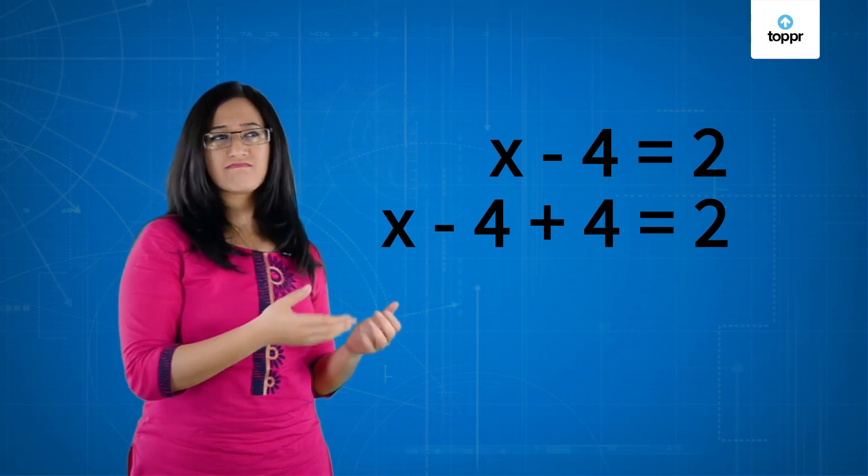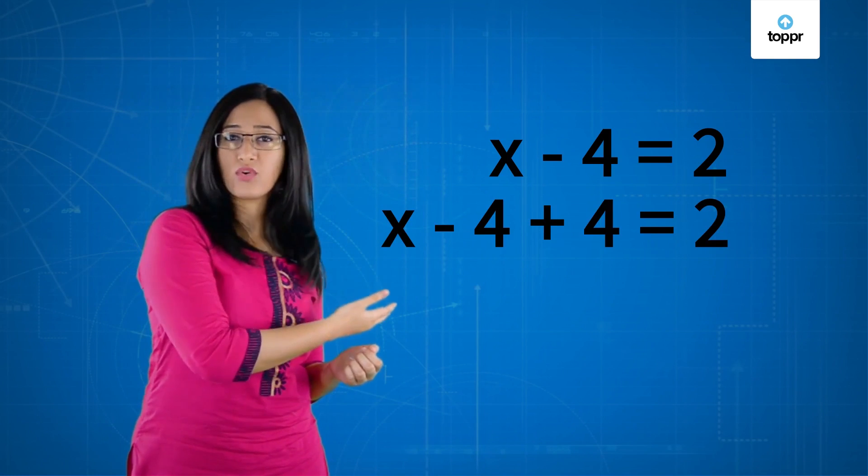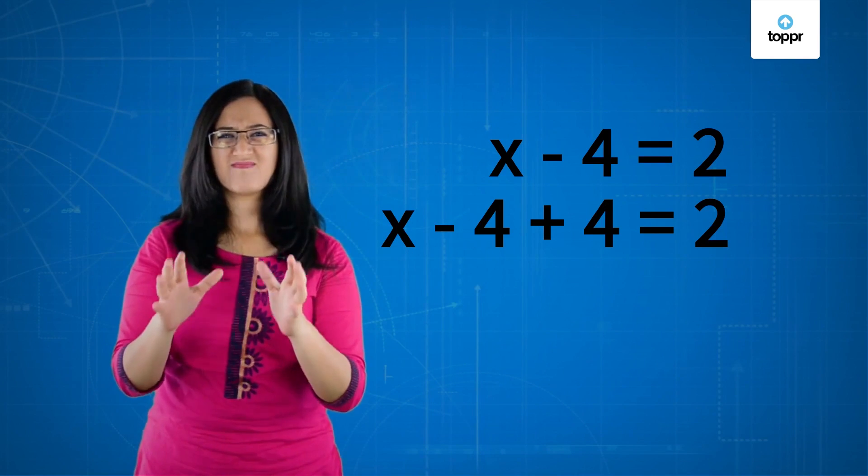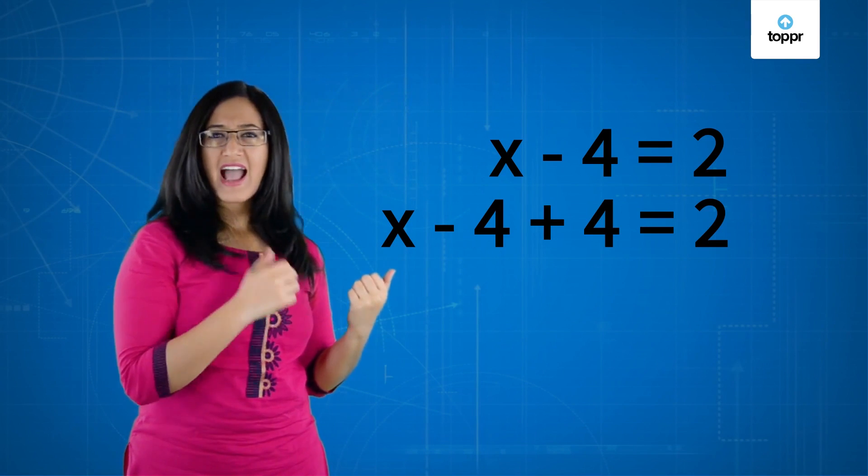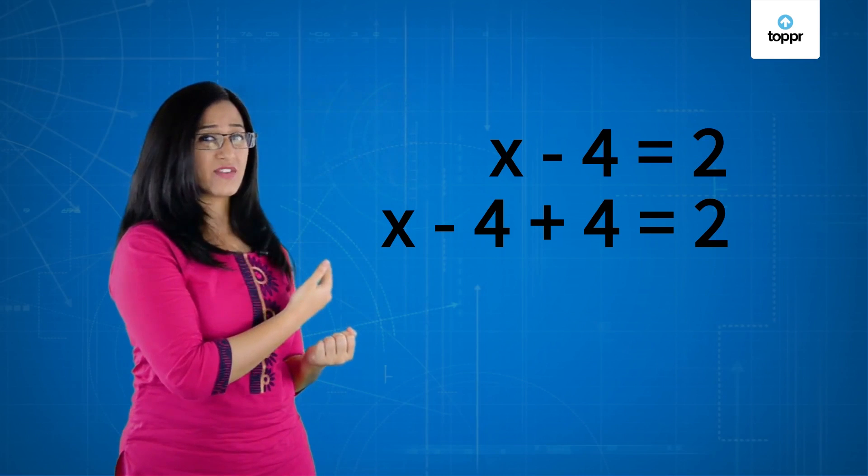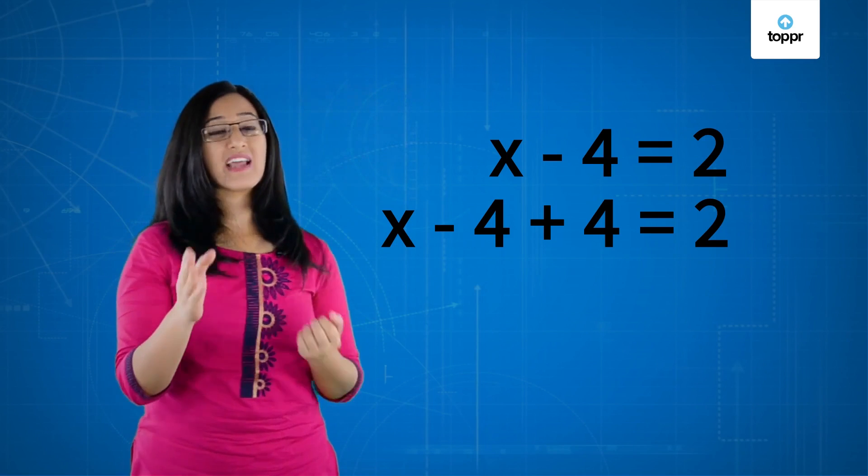Sounds right. Okay, let's do that. So we get x - 4 + 4 is equal to 2. Wait, wait, wait. There is something wrong. Adding a 4 to only one side of the equation would be wrong and here's why.